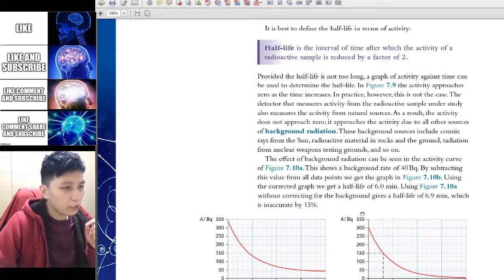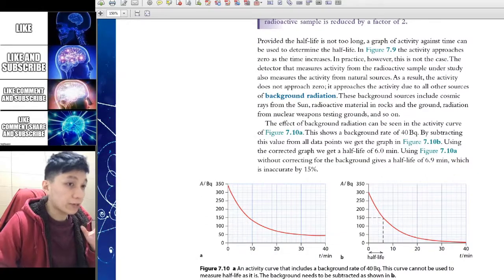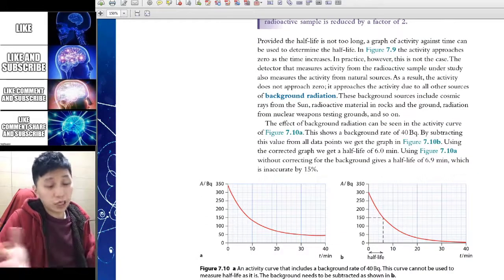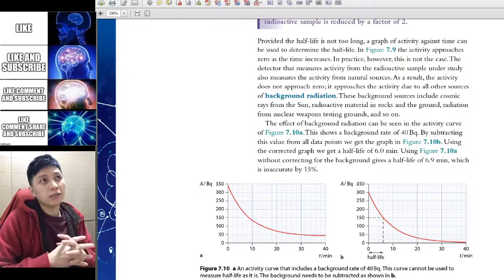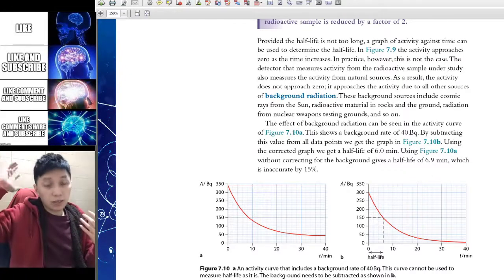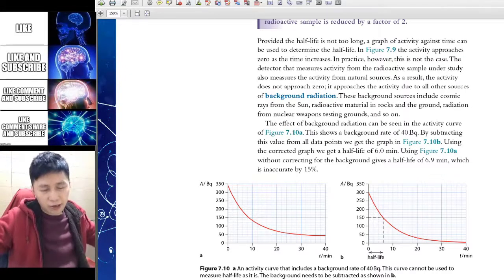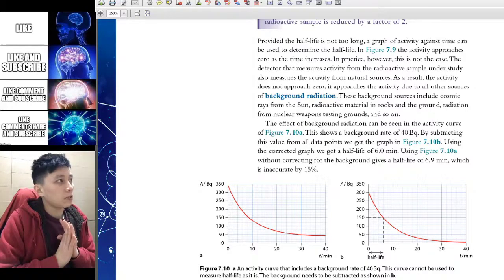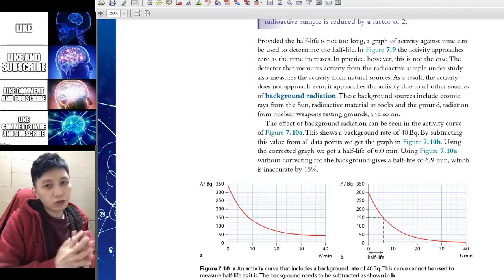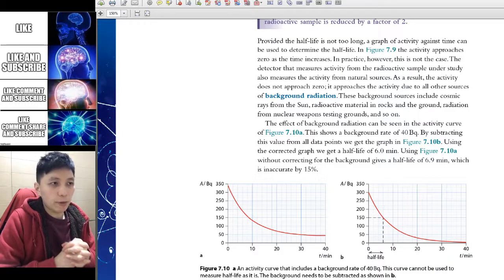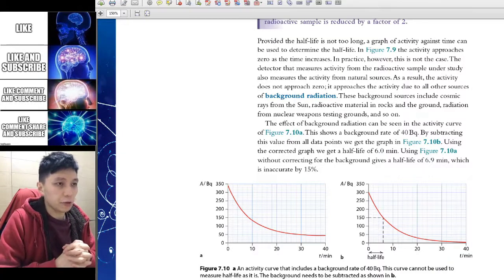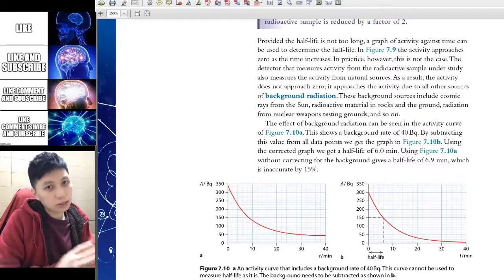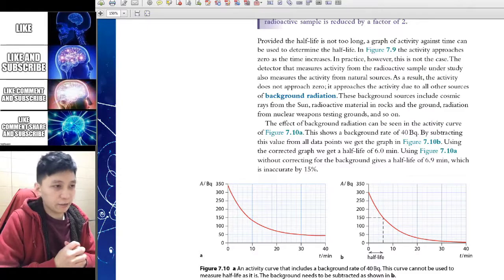Down below here you can see something called the background radiation and again you have learned it in IGCSE. The background is from the universe like in outer space or it could be the natural rock or it could also be the aviation tower etc. There will be background radiation also.